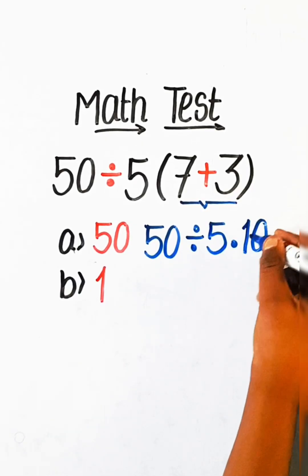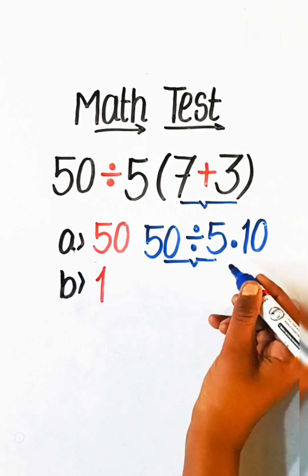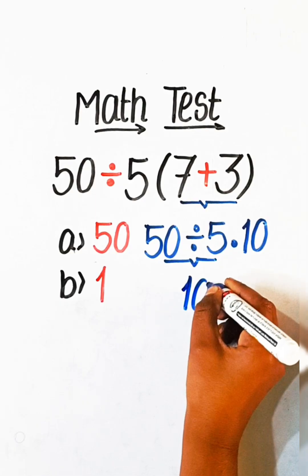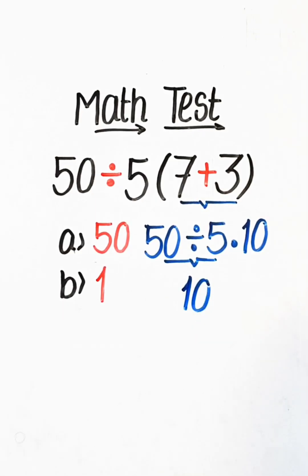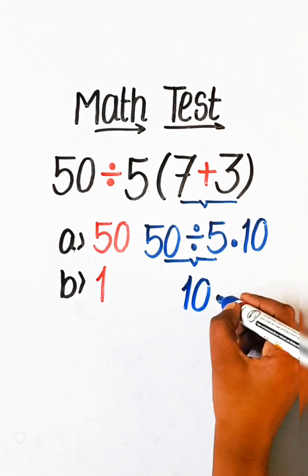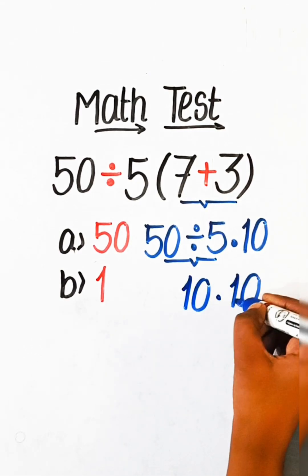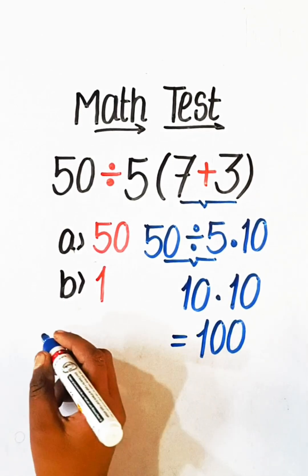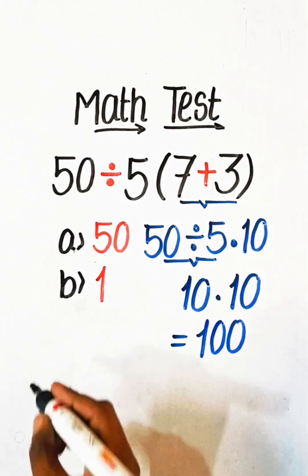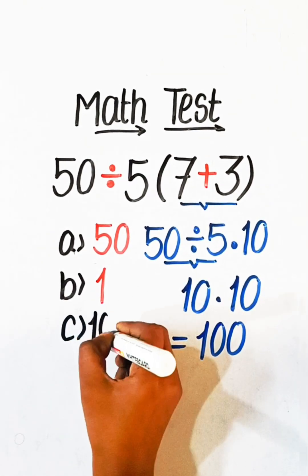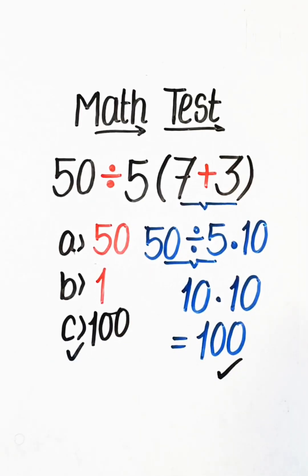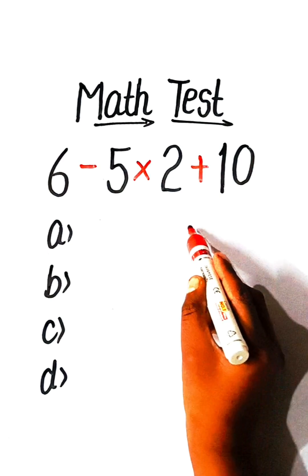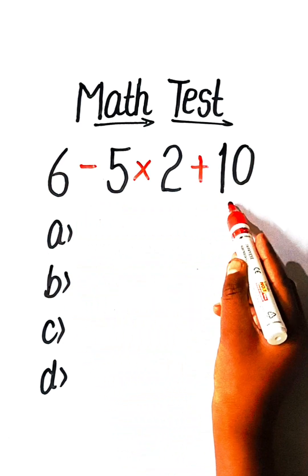7 plus 3 is 10. 50 divided by 5 is 10, multiply by 10 equals 100. So the answer is Option C: 100.